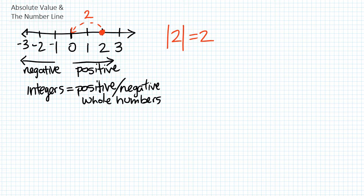Similarly, let's look at the mirror image of it, the opposite of it, negative 2. What is the distance to zero? Well, it's also 2. So we see that the absolute value of 2 and the absolute value of negative 2 are both 2.